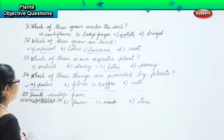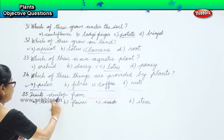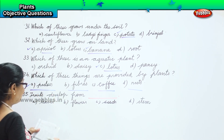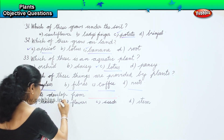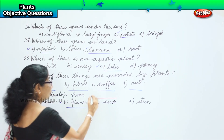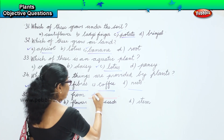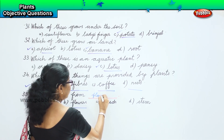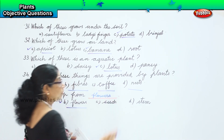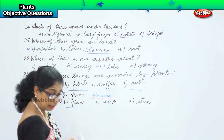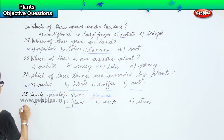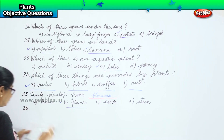Fruits develop from flowers. Flowers is the answer. Fruits develop from flowers — that option is correct.